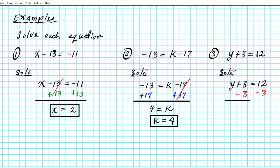On the left side, plus 3 and minus 3 are additive inverses and cancel to 0, so we have y equals 12 minus 3. Subtracting, keeping the sign of the larger as positive: the answer is 9. So y equals 9.